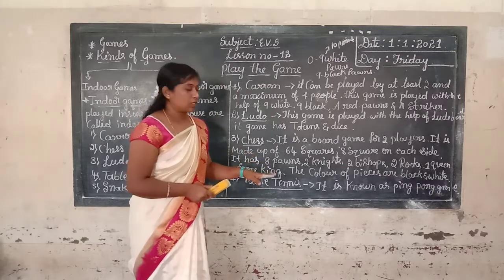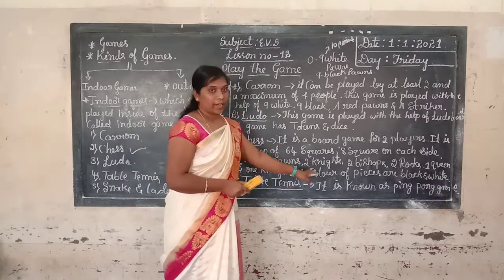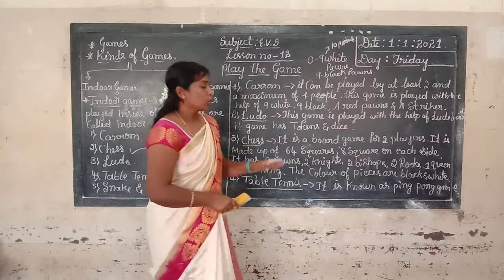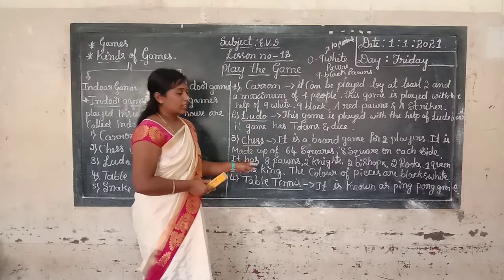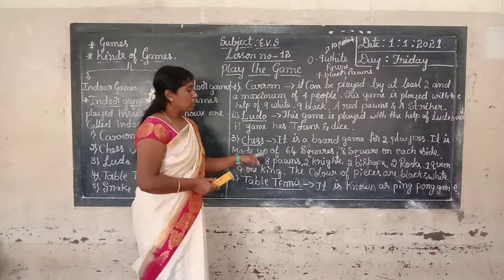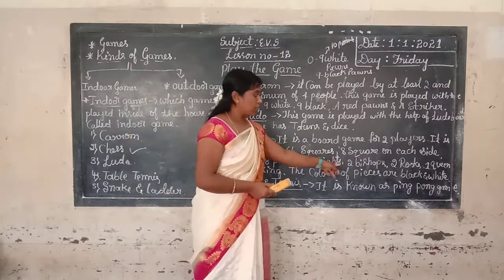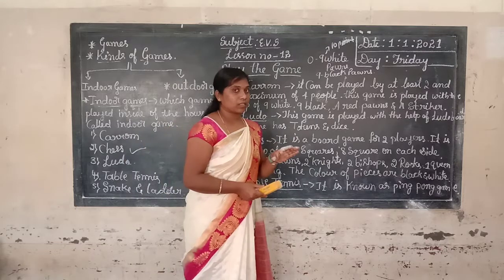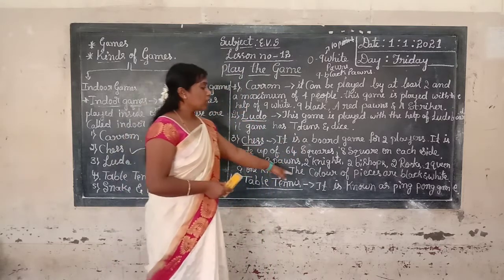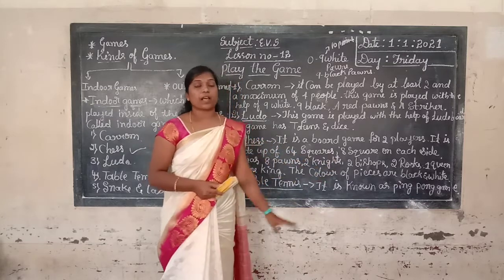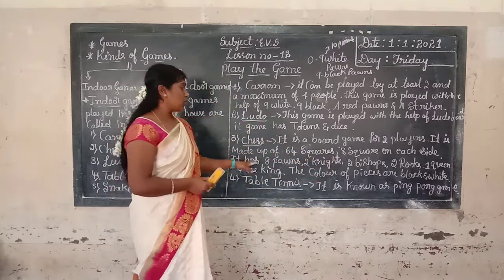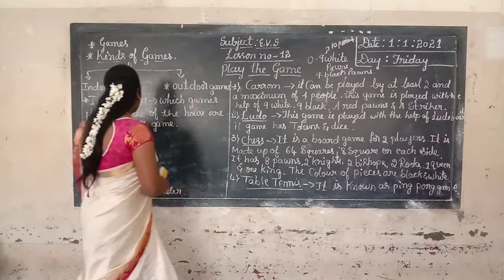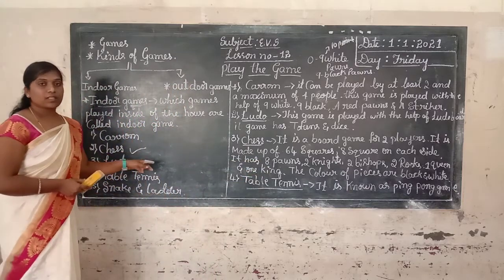Chess has 8 pawns, 2 knights, 2 bishops, 2 rooks, 1 queen, and 1 king. The color of the pieces are black and white. This is the important information about the chess game. Chess is an international game.